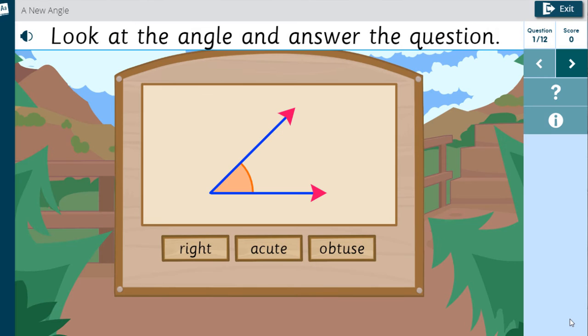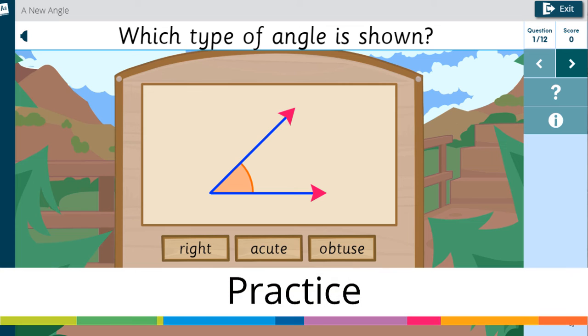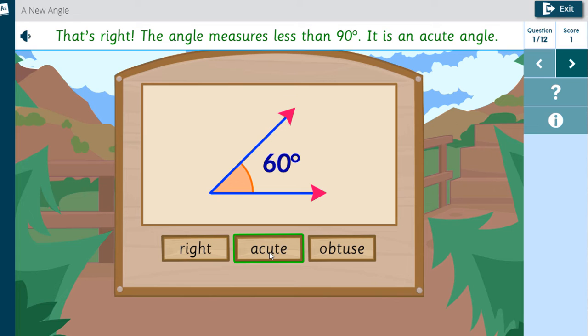Look at the angle and answer the question. Which type of angle is shown? That's right. The angle measures less than 90 degrees. It is an acute angle.